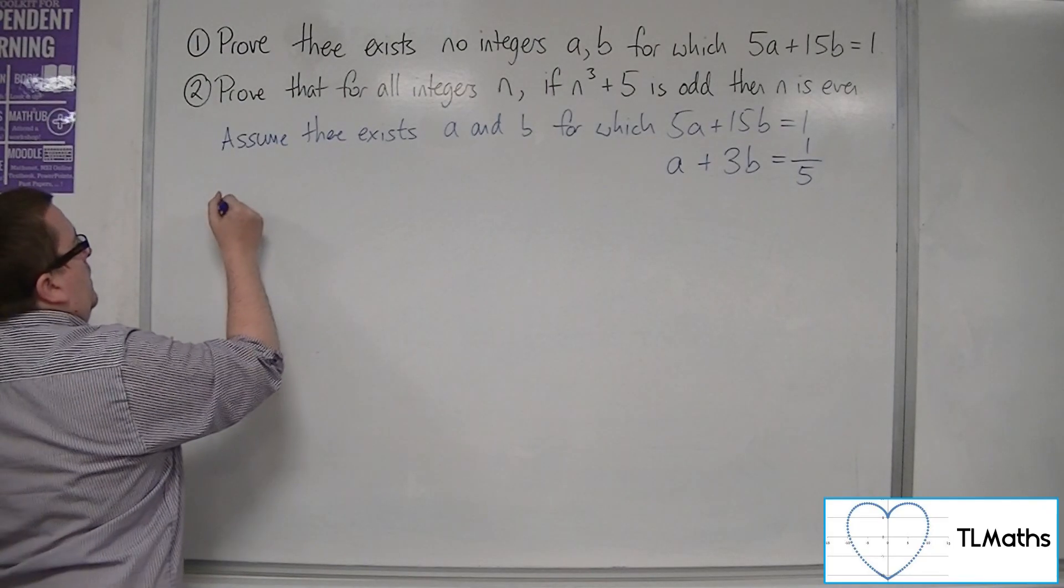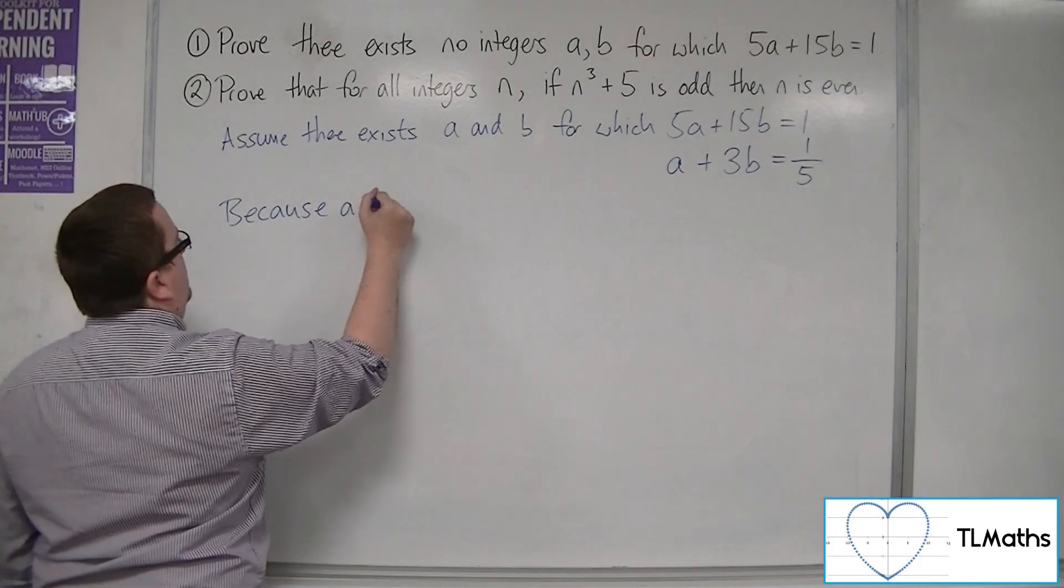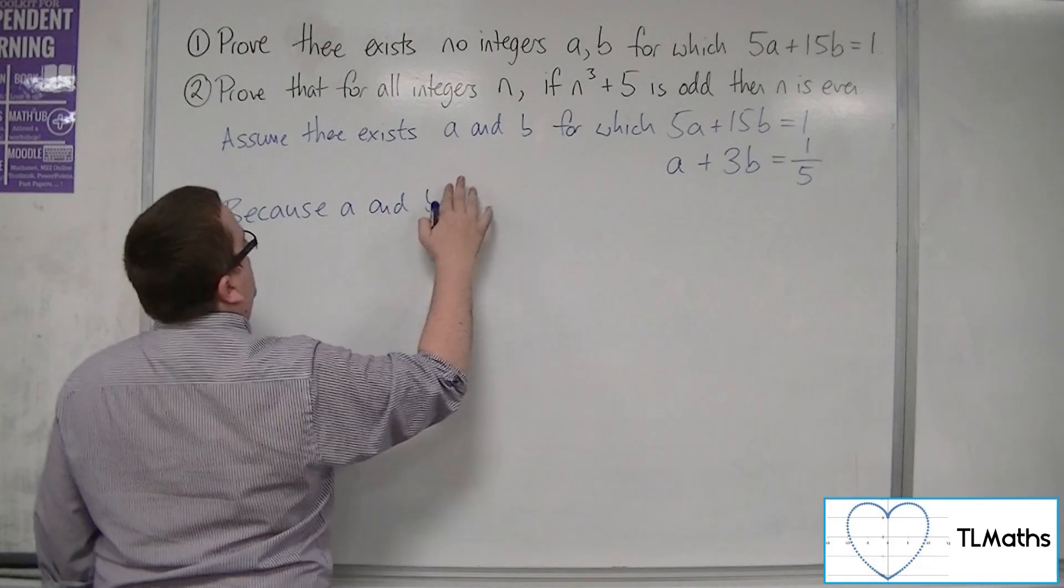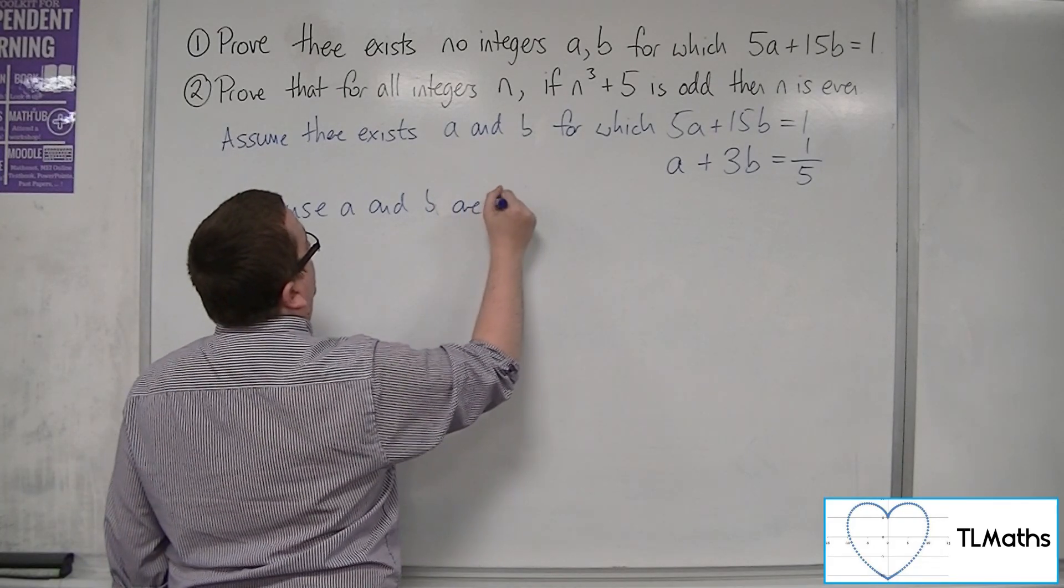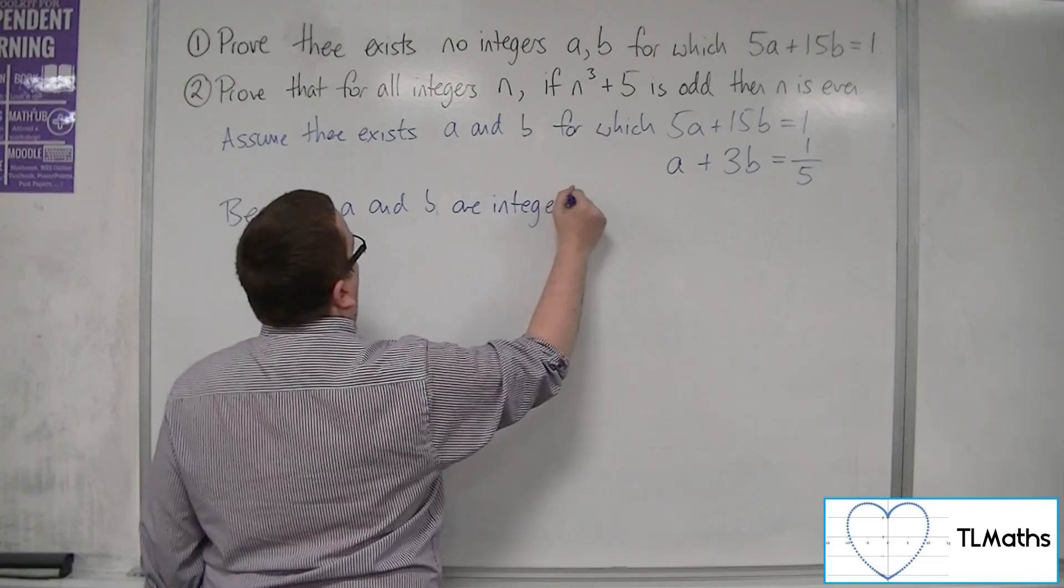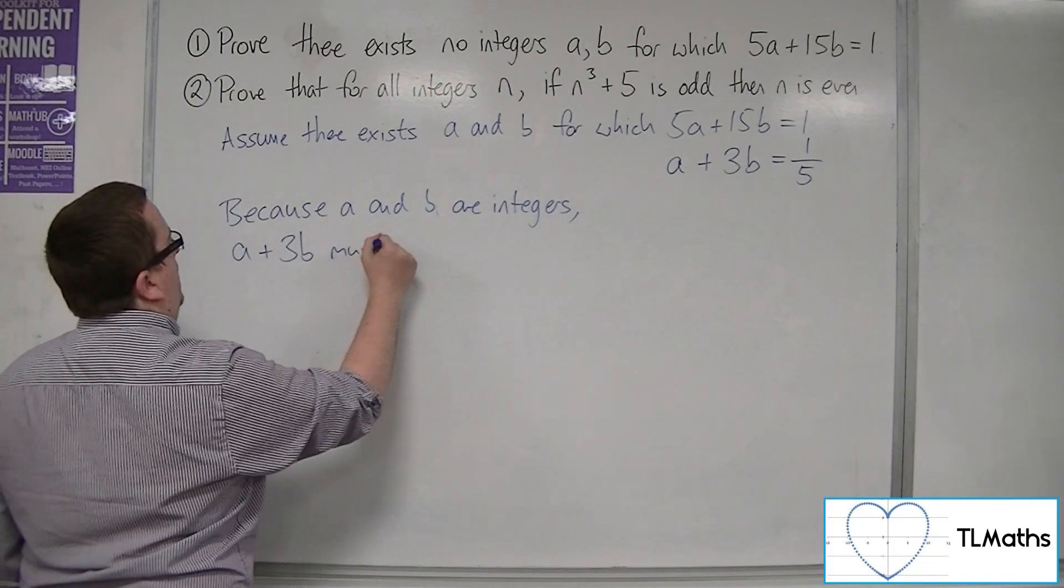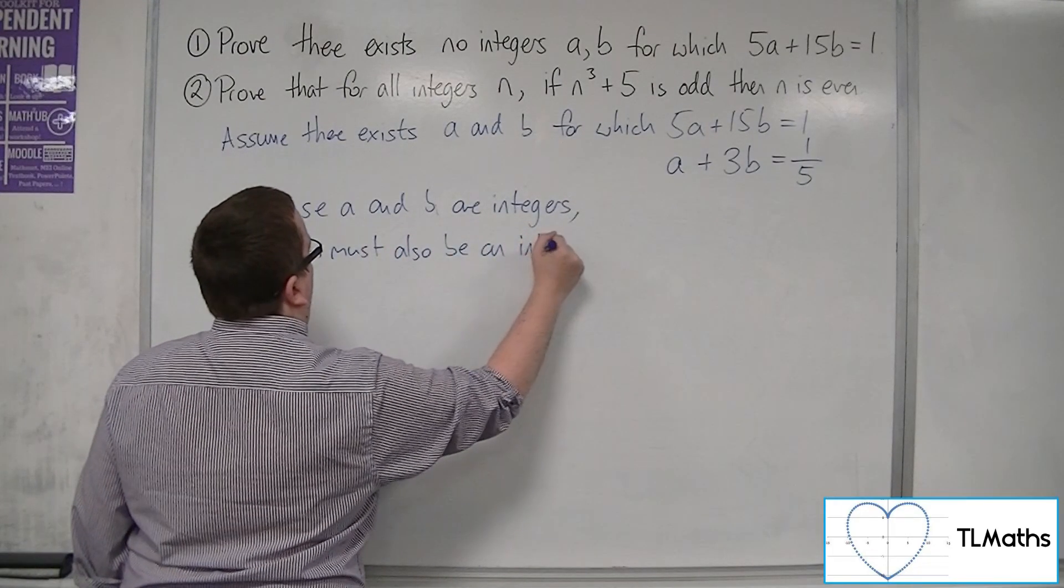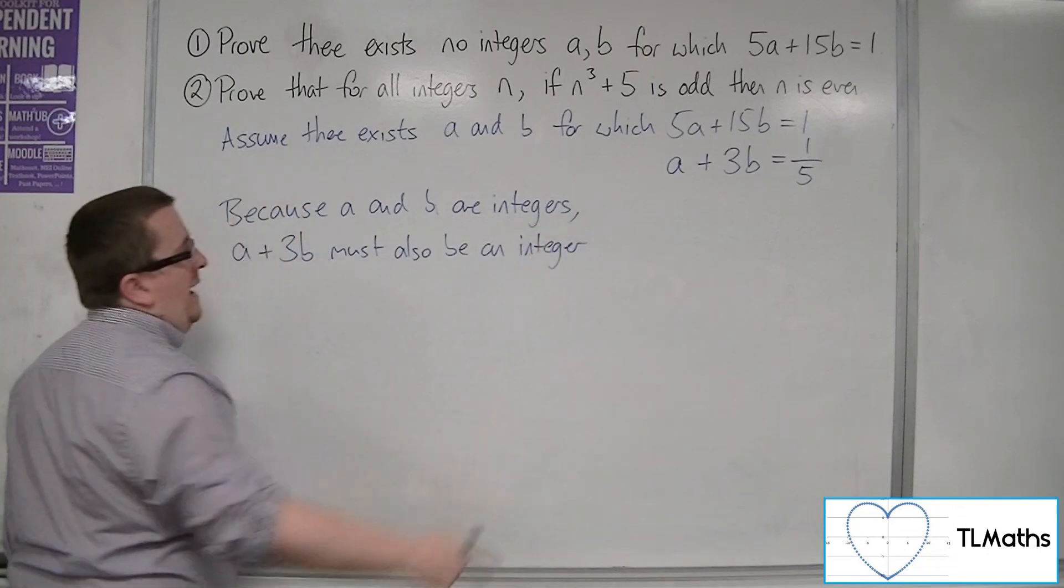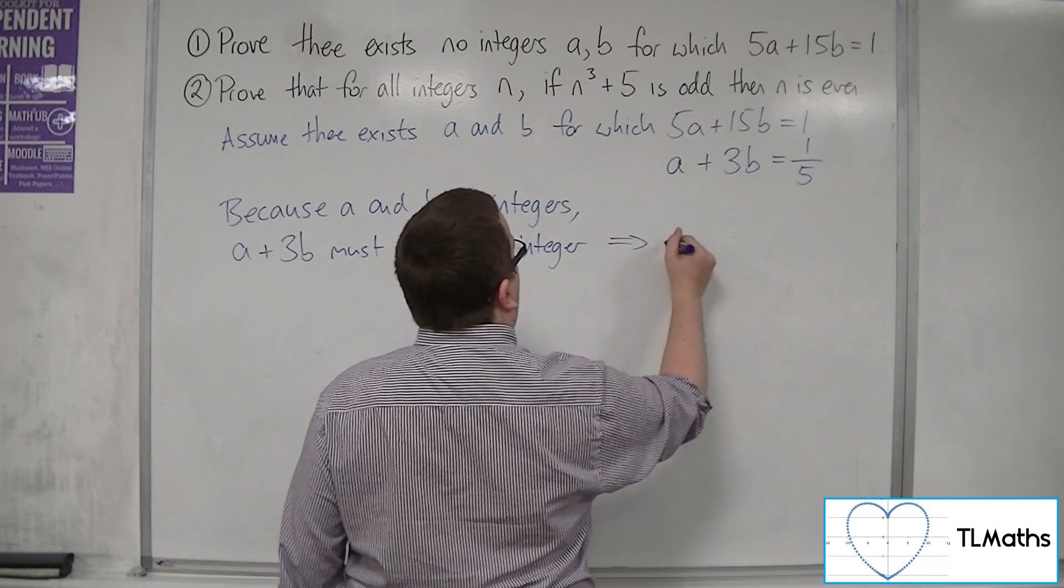However, because a and b are integers, a plus 3b must also be an integer. But here we're saying it has to be equal to 1 fifth. So this implies that there is a contradiction.